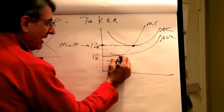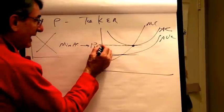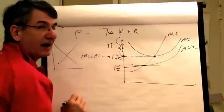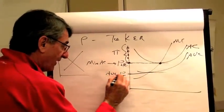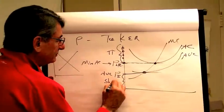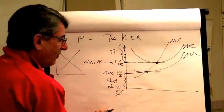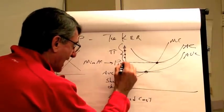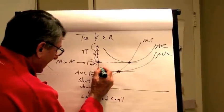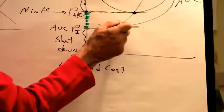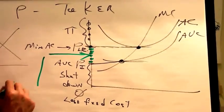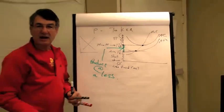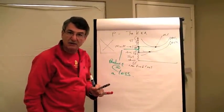We'll call it I for indifferent — if this is the price coming out of the market, the firm is indifferent about producing. At any price above PLR, the price is above the average cost and the firm will produce and earn a profit. At any price below the minimum average variable cost, the firm will shut down, produce zero quantity, and just lose its fixed costs. For any price between average cost and average variable cost, the firm will produce at a loss, because it will lose less by producing than by shutting down.